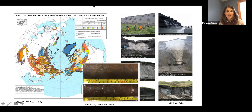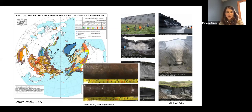On the left, you'll see the current existing circumarctic map of ground ice in the Arctic, which was produced or led by Jerry Brown et al. in 1997. Since then, there's only been smaller-scale efforts to try to improve upon this, but there's clearly lots more data that has been collected in the intervening years, and ways in which we could improve on this ground ice map.